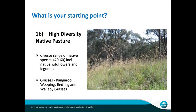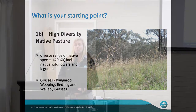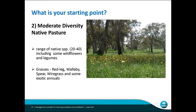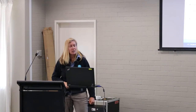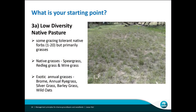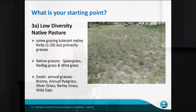Or do you have a high diversity native pasture — a diverse range of native species, maybe 40 to 60, including wildflowers and legumes, with kangaroo grass, weeping grass, redleg and wallaby grasses? Or a moderate diversity native pasture with a smaller range of native species, some wildflowers and legumes, and grasses including redleg, wallaby, spear, and wire grass? Or a low diversity native pasture with some native wildflowers left, maybe spear grass, redleg, wire grass, and quite a lot of exotic annual grasses?